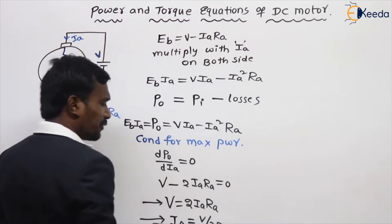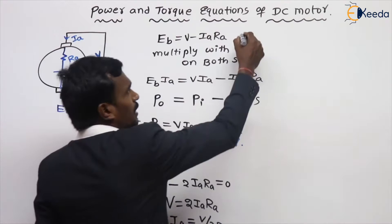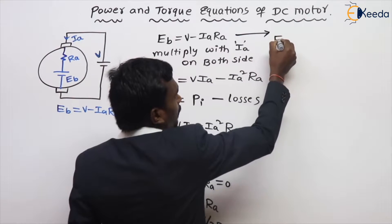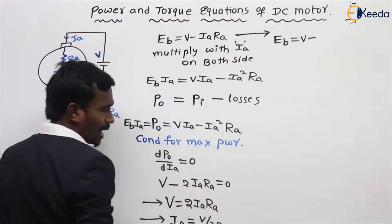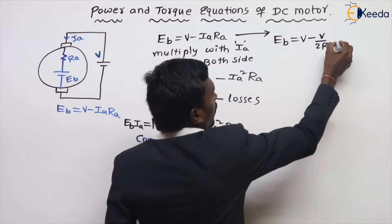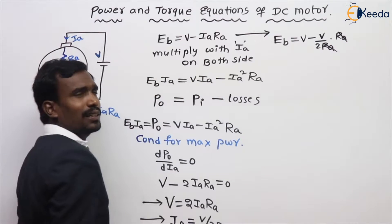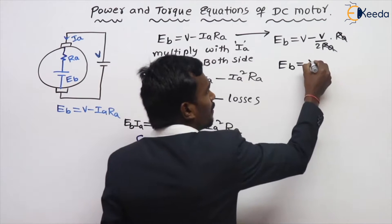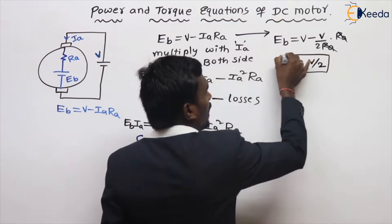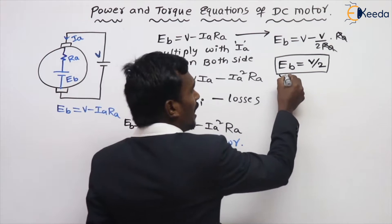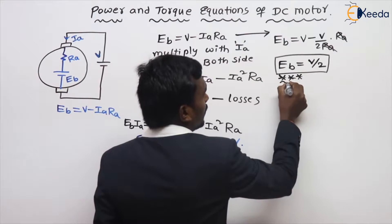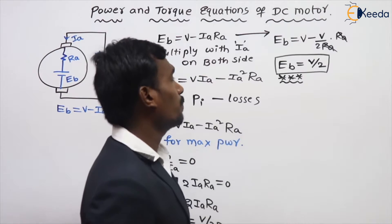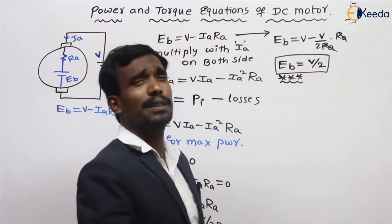Apart from this, the main condition for maximum power — substitute IA into the back EMF equation. EB equals V minus (V/2RA) times RA. RA gets cancelled, so EB equals V minus V by 2, which is V by 2. So back EMF equals V by 2 — this is the condition for maximum power, asked many times in competitive exams in different models.